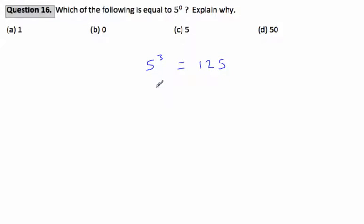Let's think about 5 squared. 5 squared is 5 by itself, which is 5 by 5, which is 25.